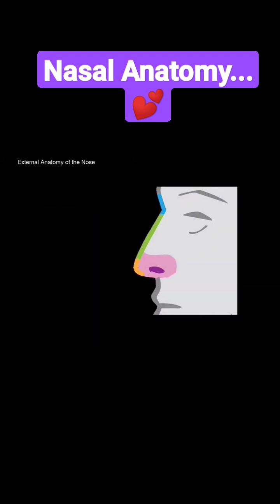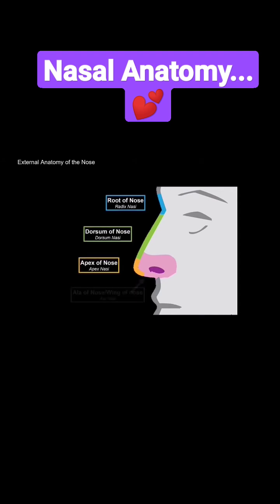So here you see a side view of the nose. There are actually anatomical names to each of the segments of the external nose, and here each are separated by color. So we have the root of the nose, the radix nasi. Then we have the dorsum of the nose, and an apex. And then laterally we have the wings of the nose, or ala nasi, which go around the nostrils.